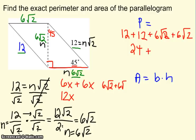6 root 2 plus 6 root 2, what does that become? Well, it becomes 12 root 2. So I've got 24 plus 12 root 2.